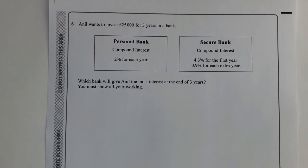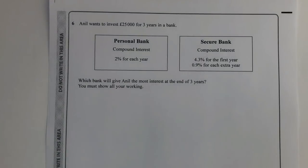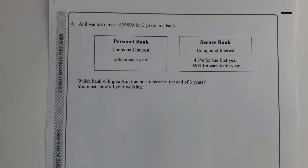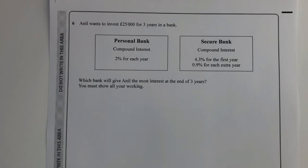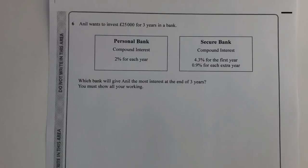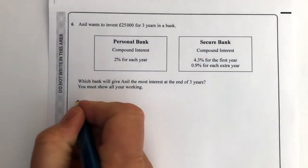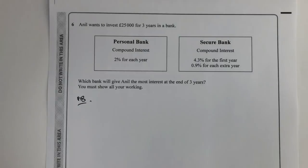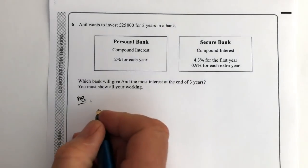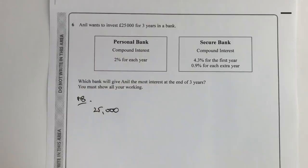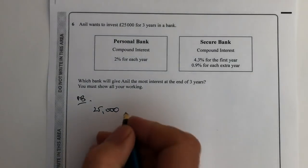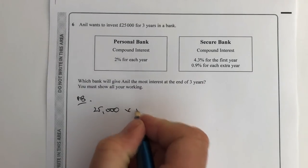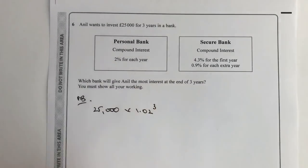Question number six is a comparison of two banks and it's compound interest - two percent for each year for Personal Bank, and then Secure Bank is going to be 4.3 percent for the first year and 0.9 percent for each of the extra years. With Personal Bank we've got a situation where we're going to invest £25,000, and the normal formula is we multiply by the multiplier - in this case two percent is 1.02 - and it's going to be for three years.